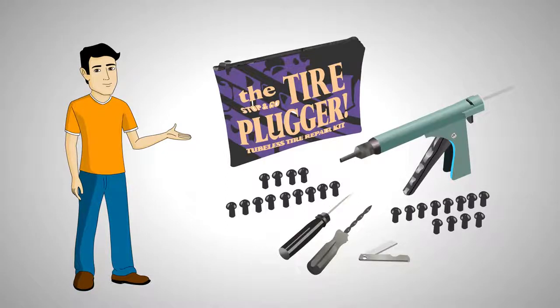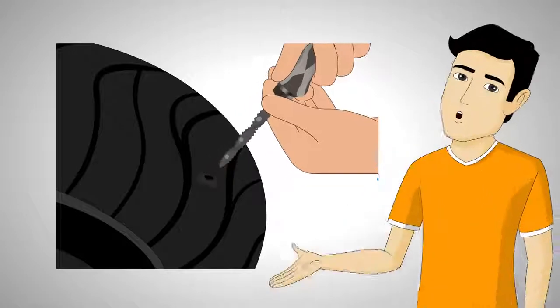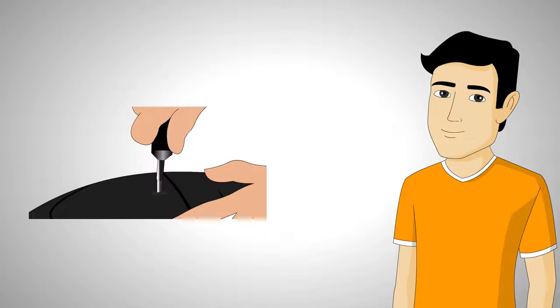The standard tire plugger comes with everything you need to fix a flat fast. A reamer and probe tool for preparing the puncture, a spring-loaded mechanical plugger that drives the mushroom head plug into the hole.